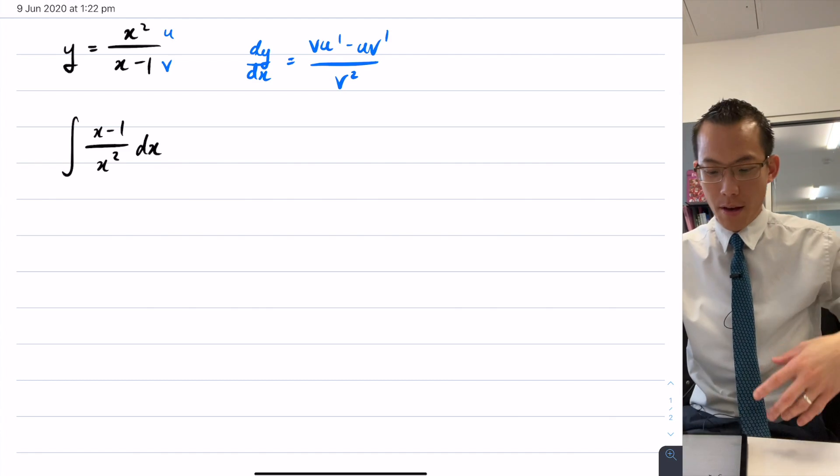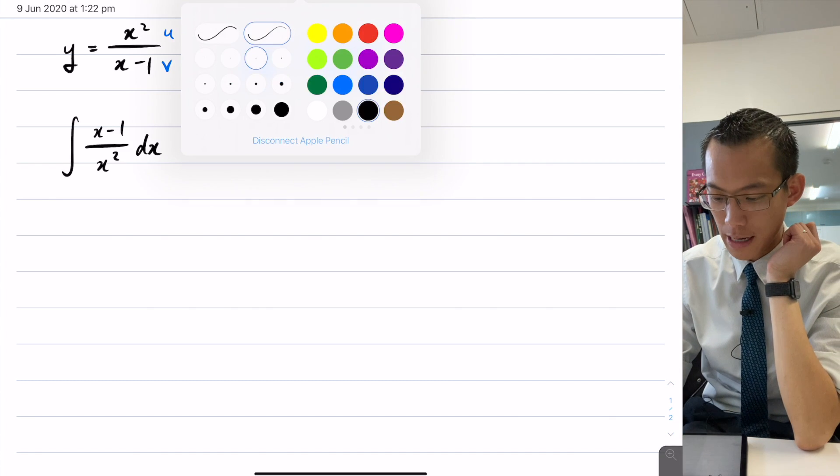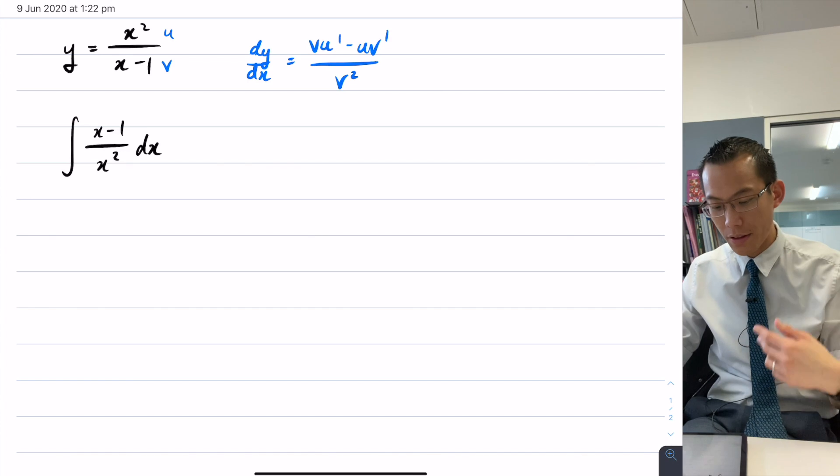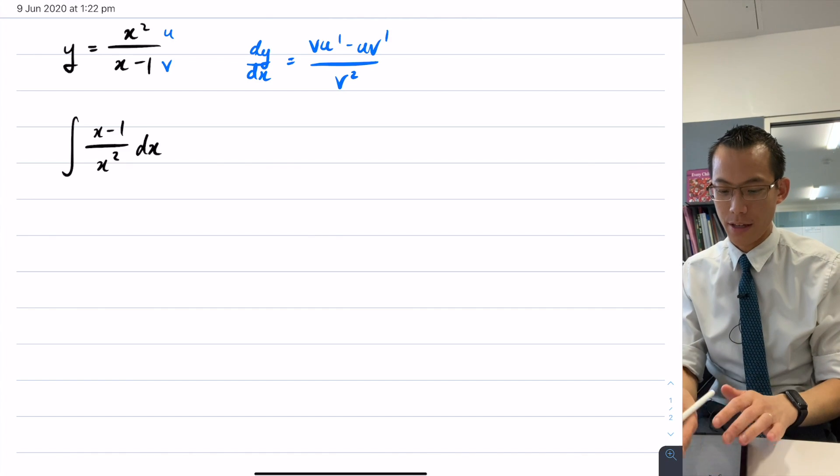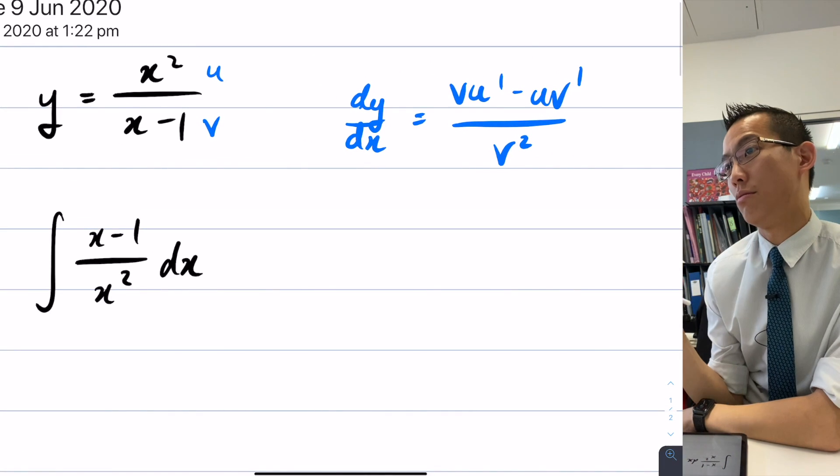Let's have a look at this precise example. Now just to pedal back one step, what I'm trying to illustrate here is that even though when it comes to differentiation, we've got this general purpose quotient rule.